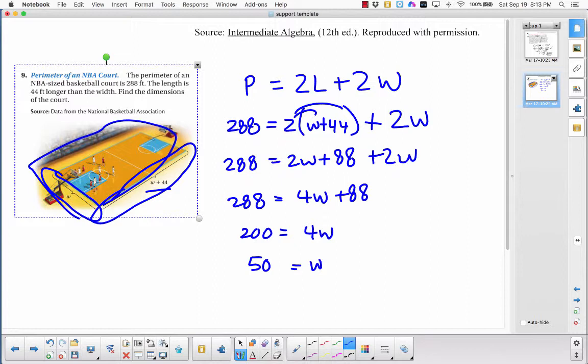So the width is 50, and that means that the length must be 50 plus 44, or 94. So the length has got to be 94.